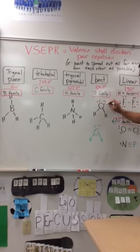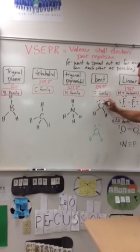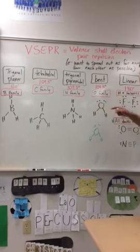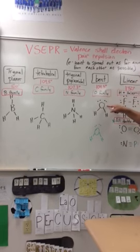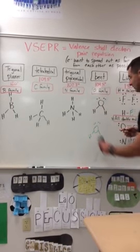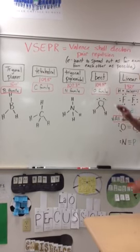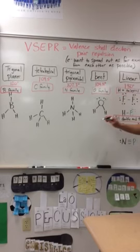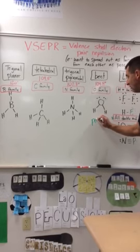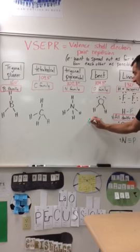So this interaction from these lone pairs of electrons pushes the bond down to make it 104 degrees. And that is a water molecule that we see all the time in life. And that is called a bent shape. And a bent molecule is always polar.